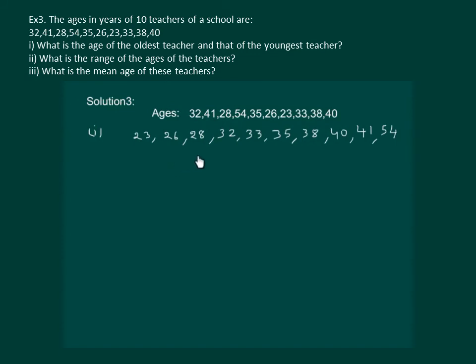So, after arranging the data, it is very easy to answer our question. We can say that age of the youngest teacher is 23 years, while the age of the oldest teacher is 54 years.